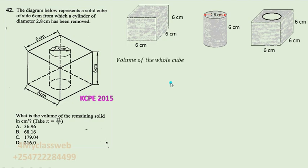So first of all, we need to work out the volume of the whole of that cube, which should be length times width times height. And therefore, it should be 6 times 6 times 6, which should be equal to 216 cm cube.